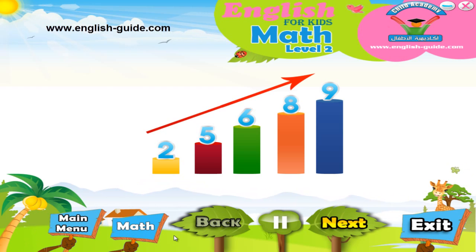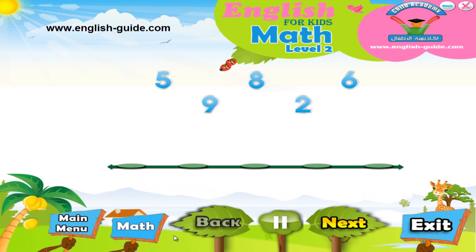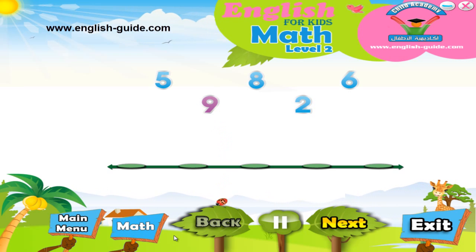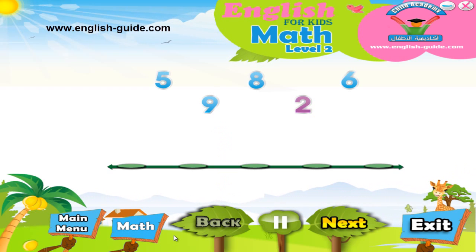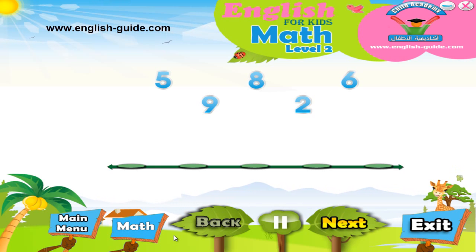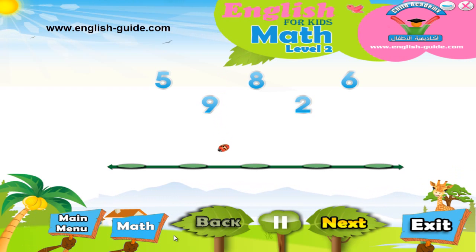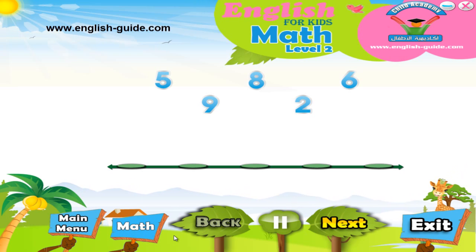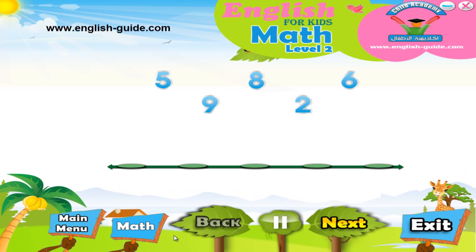Let's take an example. On the screen we have the number five, the number nine, the number eight, the number two, and the number six. We want to put these numbers in ascending order. To do this, we need to take the smallest number and put it at the beginning of the line, and then put the next smallest number after that.